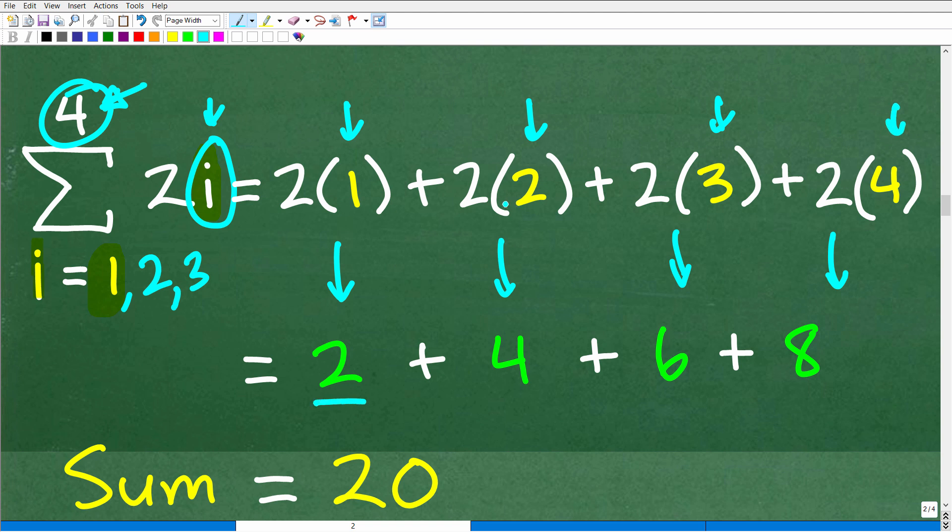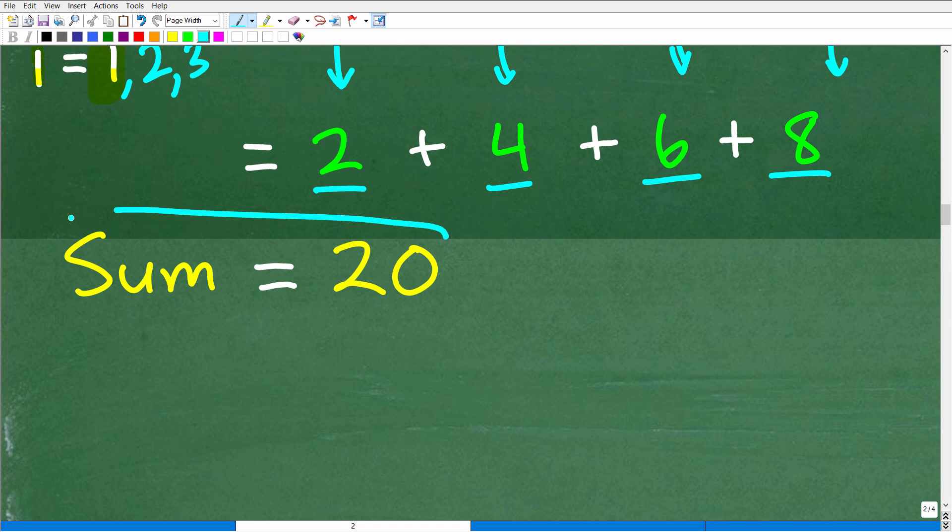And then all we have to do is simplify. 2 times 1 is 2. 2 times 2 is 4. 2 times 3 is 6. 2 times 4 is 8. And we add up all those lovely numbers and we get the sum of 20.